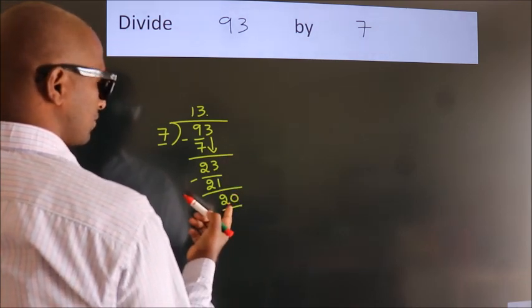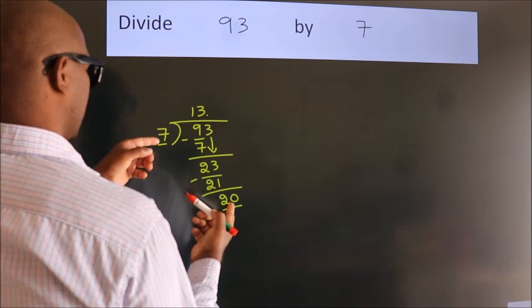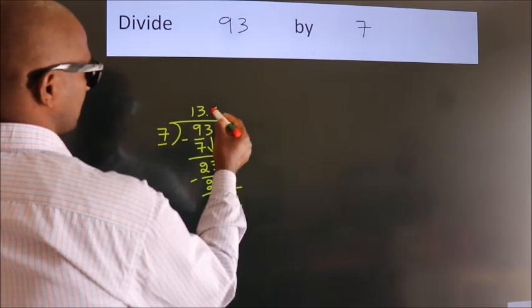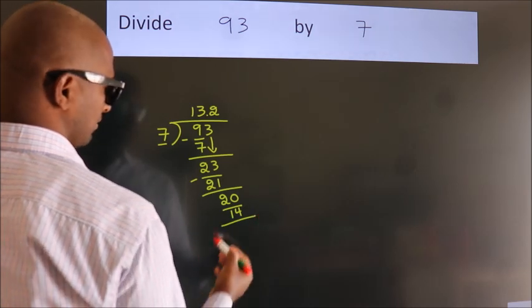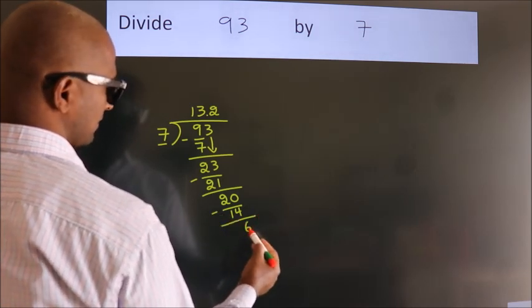A number close to 20 in 7 table is 7 2s 14. Now, we subtract. We get 6.